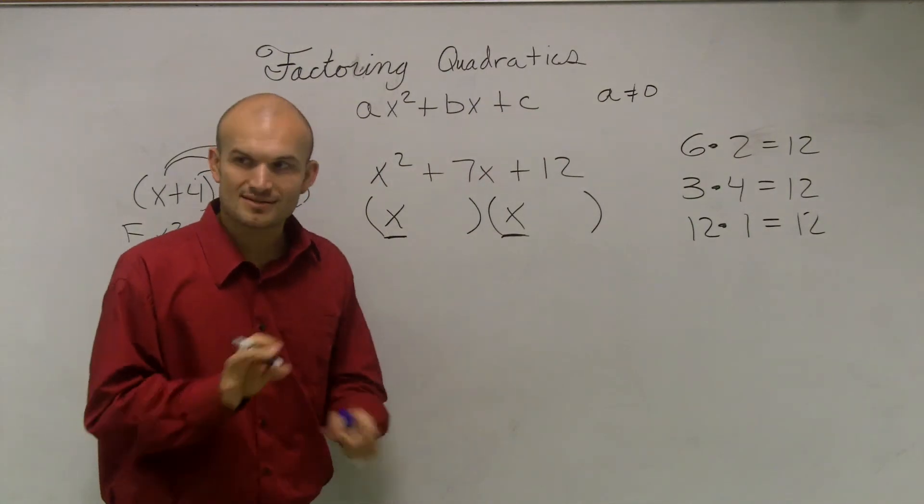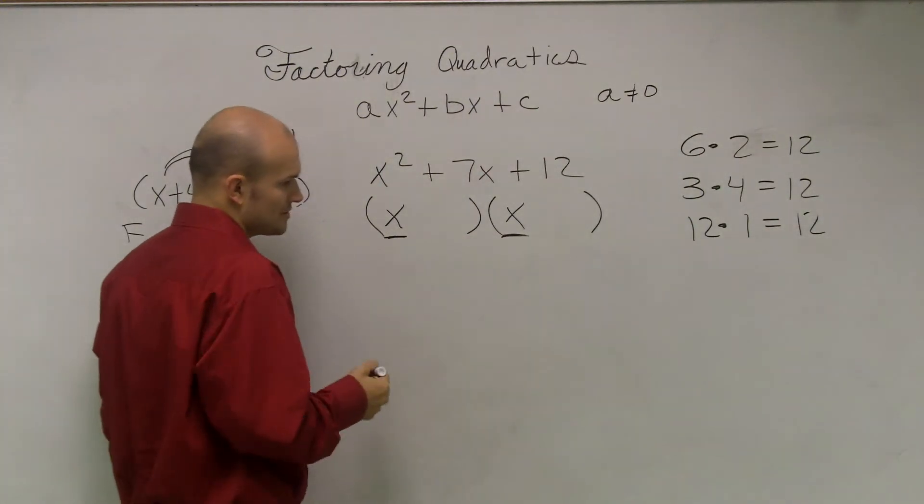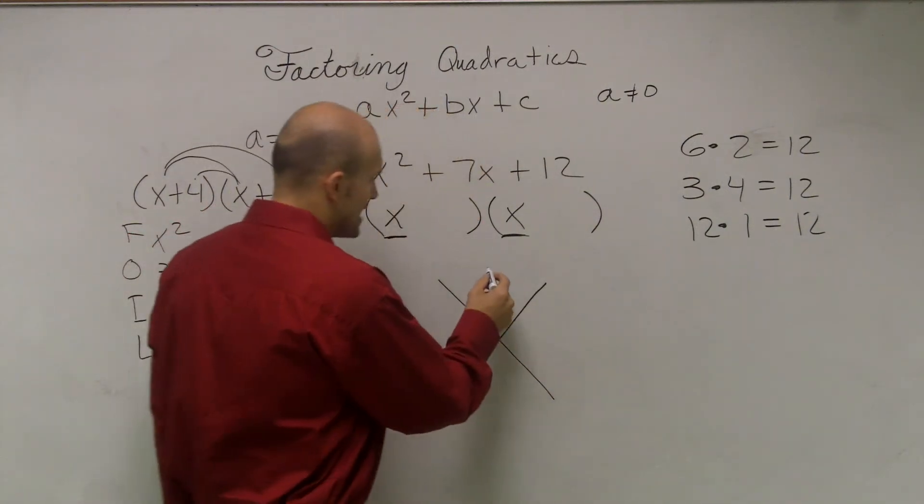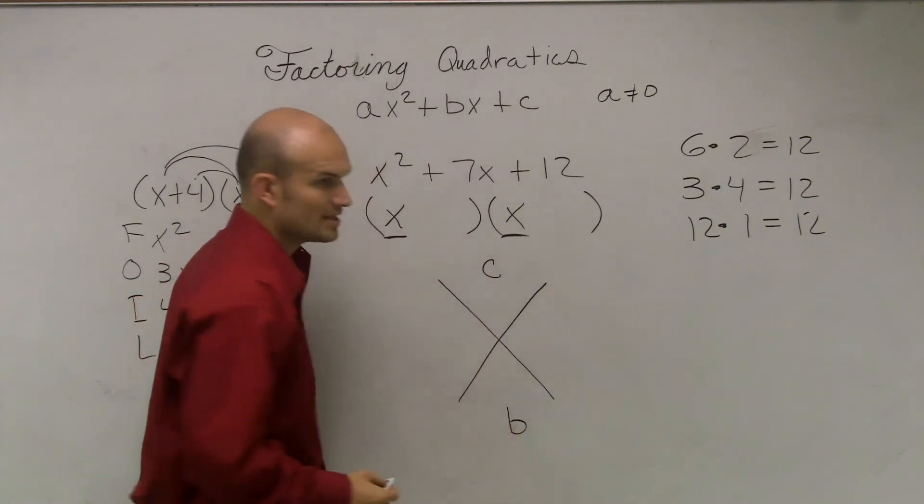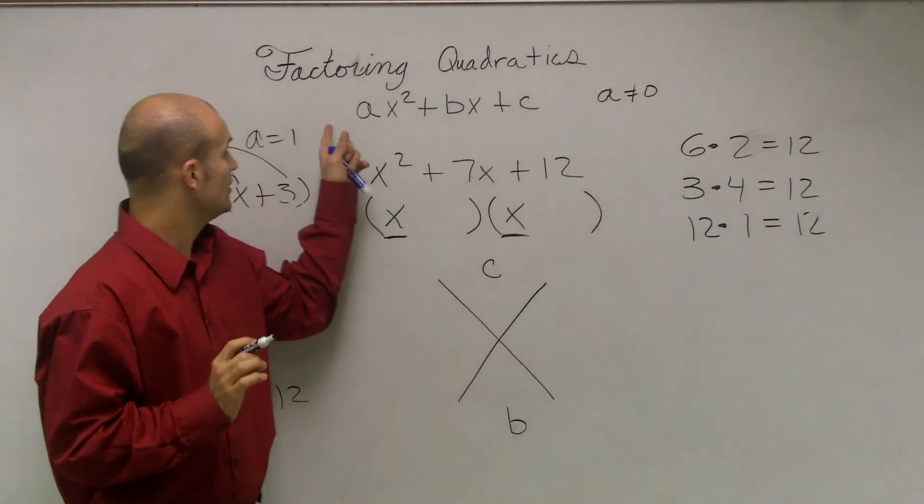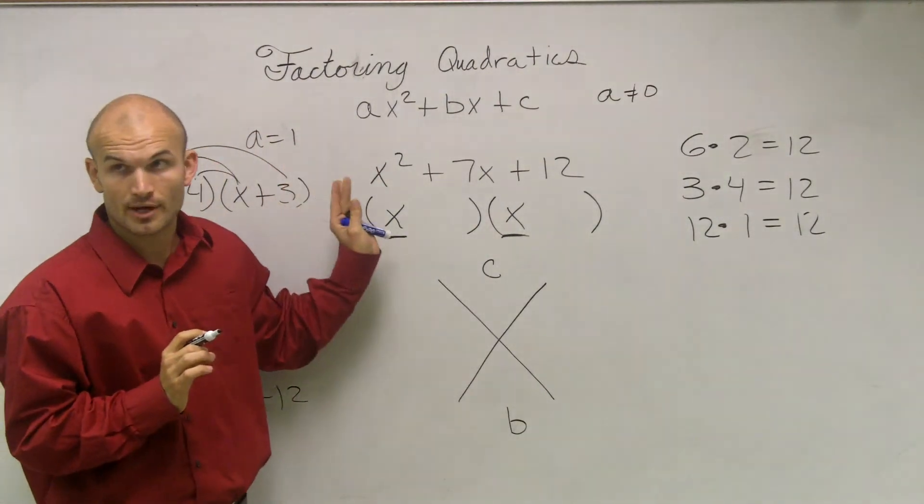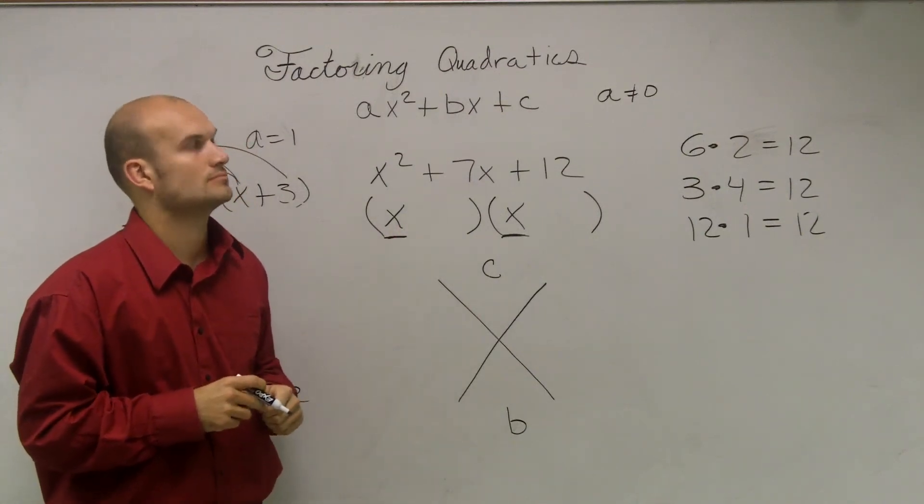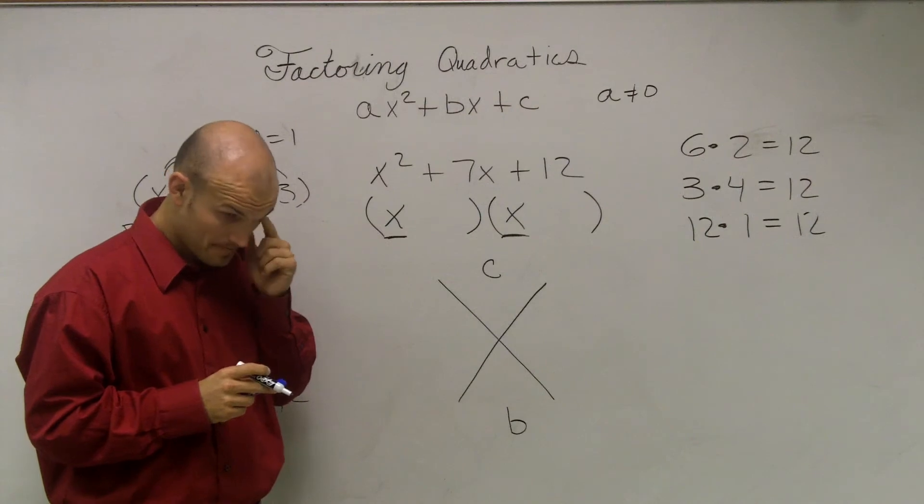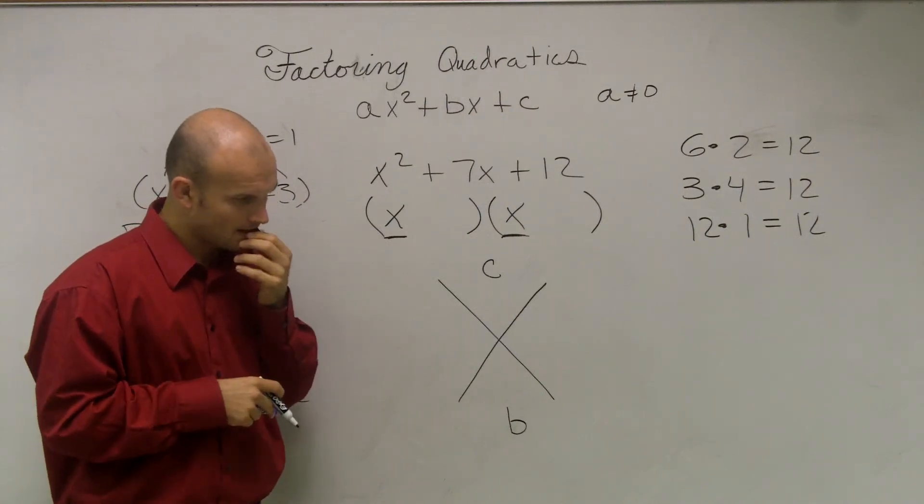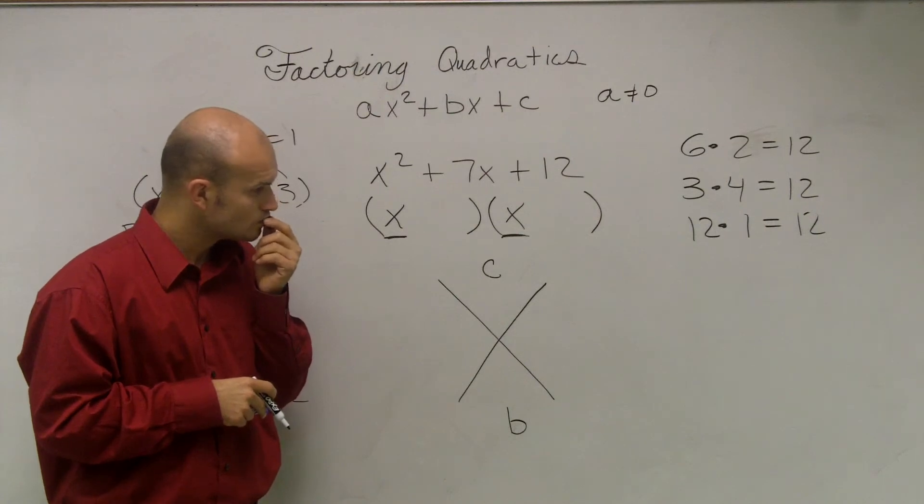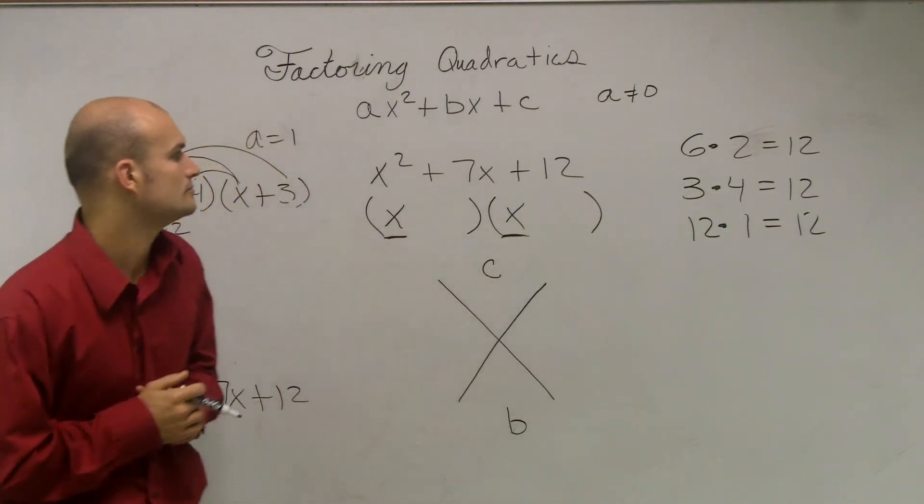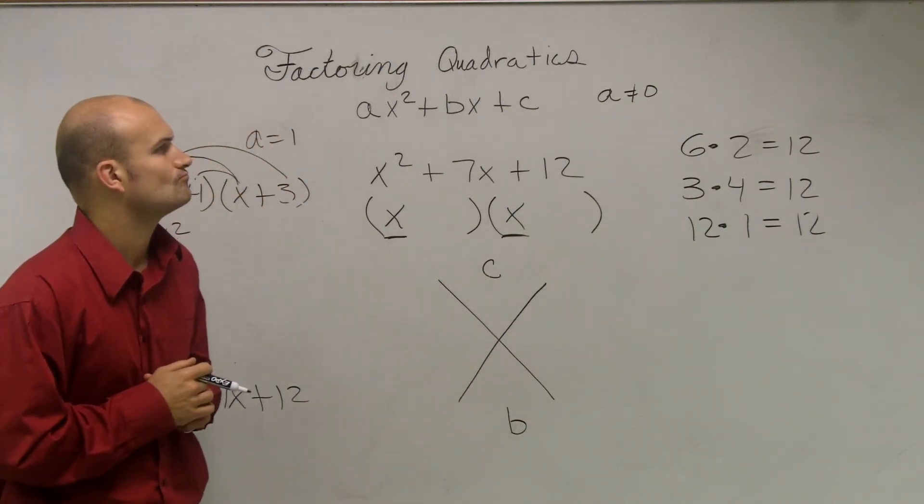So to help us solve this, I'm going to show you a little diagram that will help you out. Here's this little diagram we like to call the little cross. So if you guys would write down this cross, and up top, I'd like you to write C. On the bottom, I'd like you to write B. Now again, this is only going to work when A equals 1. Alright? And we have the quadratic looking in this form.